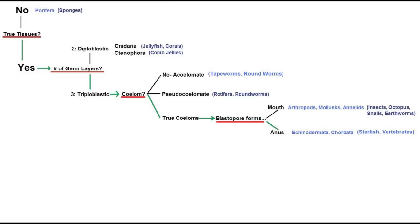Next, we can look at whether or not an organism has a body cavity. Tapeworms lack one, rotifers have a false one — a pseudocoelom — and all other organisms have a true body cavity. Imagine sticking your thumb into a tennis ball: that's the shape of an early developing embryo, and the thumb indentation is called a blastopore. In organisms like insects, it forms the mouth. You will never find an insect where the blastopore forms the anus, or one without a coelom, or one with two germ layers, or one without true tissues.